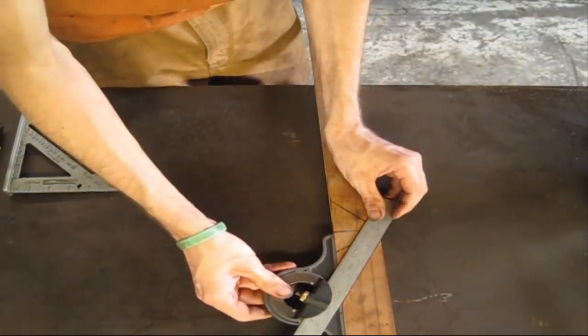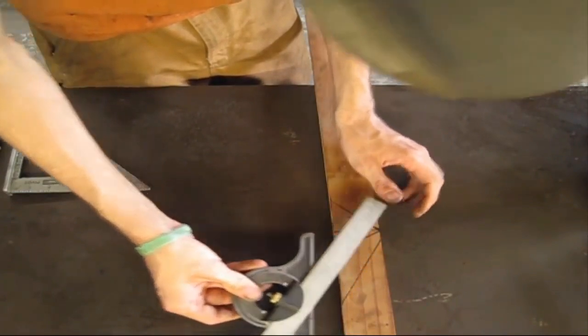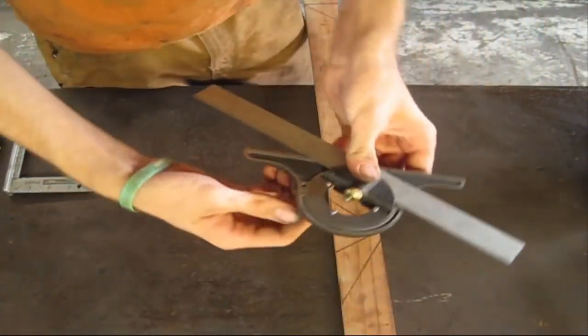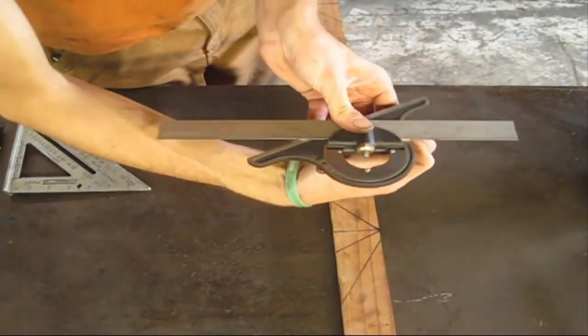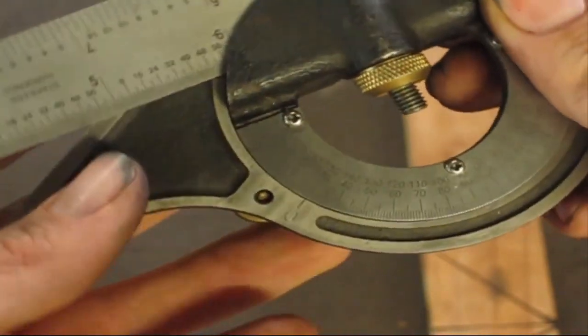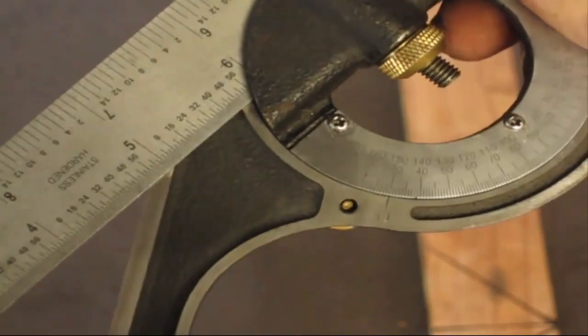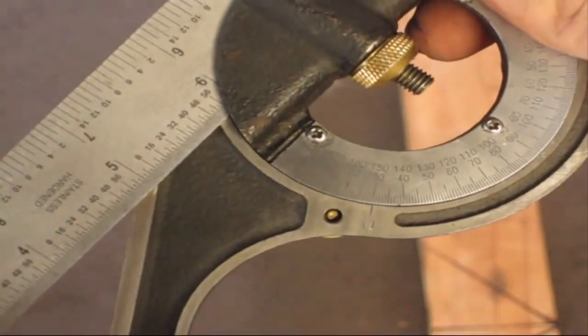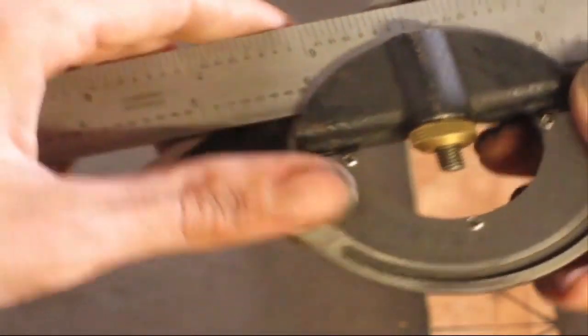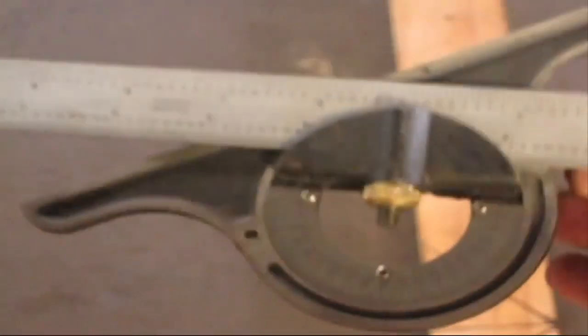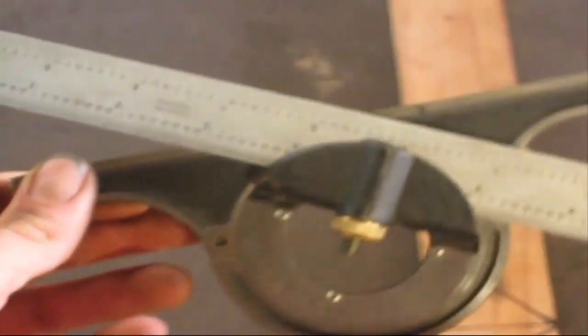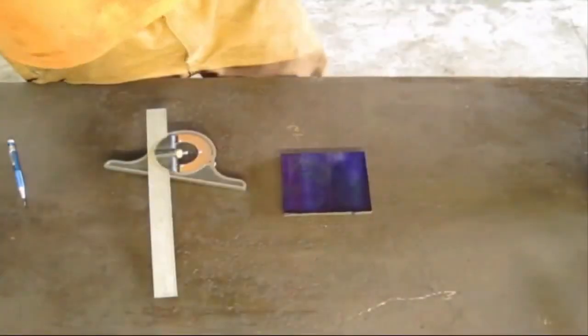So we'll double check that. Put it on there. If you can read that right there, it says 30 degrees. So just remember the reference of this tool and the speed square is different. Try not to get that confused. They're both different.